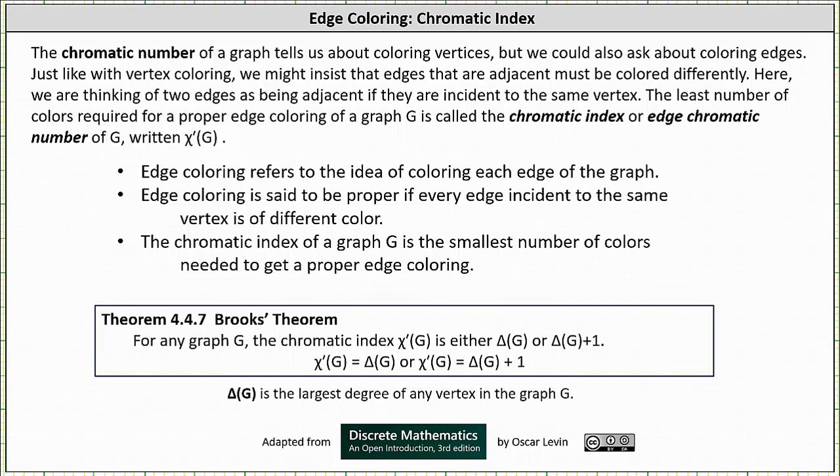Which brings us to Brooks' Theorem, which is very helpful for determining the chromatic index of a graph. For any graph G, the chromatic index χ'(G) is either Δ(G) or Δ(G)+1. Recall that Δ(G) is the largest degree of any vertex in the graph.